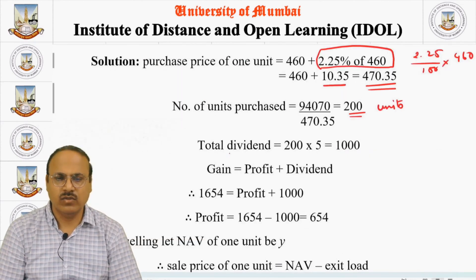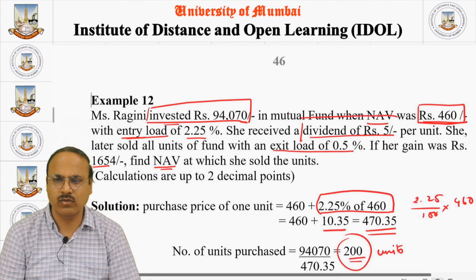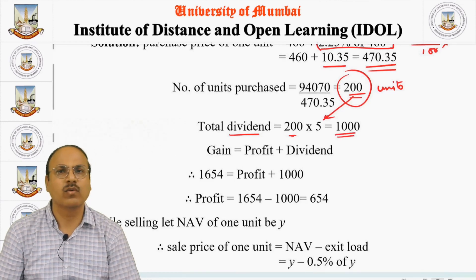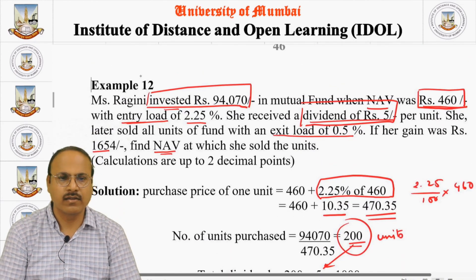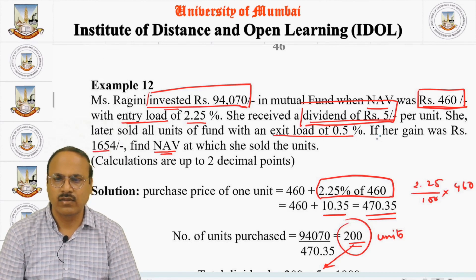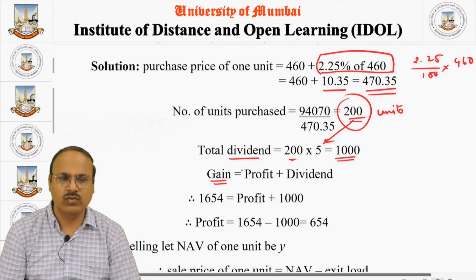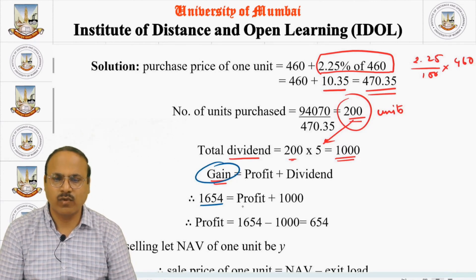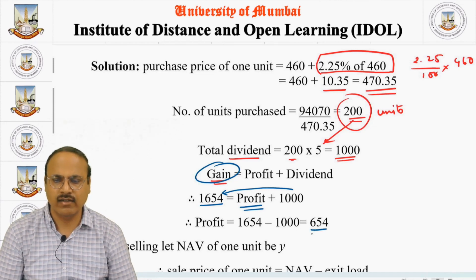The total dividend earned is the number of units (200) multiplied by Rs. 5 per unit, giving Rs. 1000 in dividend. Her total gain equals profit plus dividend. The gain is given as Rs. 1654 and the dividend is Rs. 1000. So 1654 equals profit plus 1000, which means the profit is 1654 minus 1000, giving Rs. 654 as the profit.